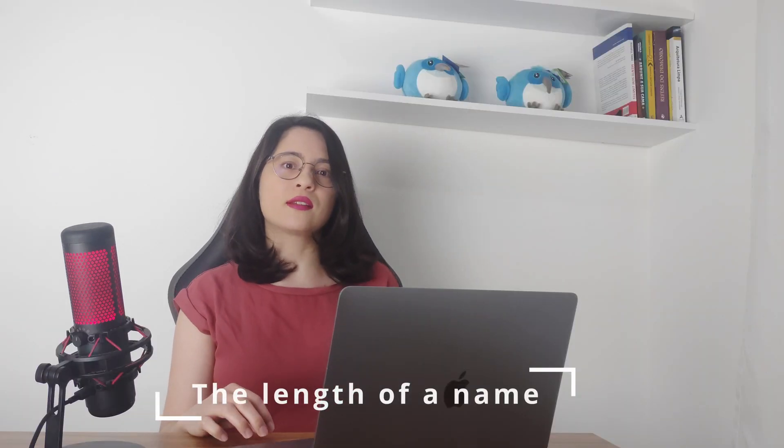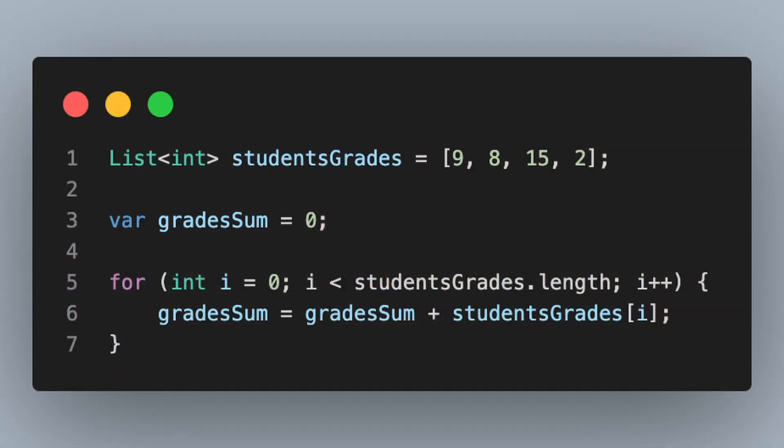Uncle Bob says the length of a variable name should be proportional to its scope. If you need to make a for loop where the index doesn't mean anything outside that scope, one letter is fine. For example, to sum all the grades in a list using a for loop, there is only one line for the scope, so the letter 'i' can be enough. But if you have a variable that has a bigger scope and is going to be used in many places of your application,